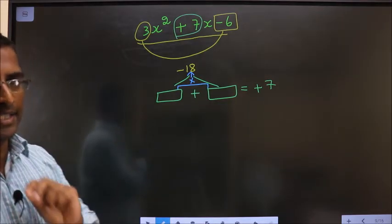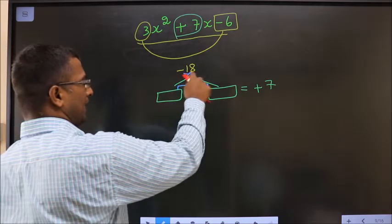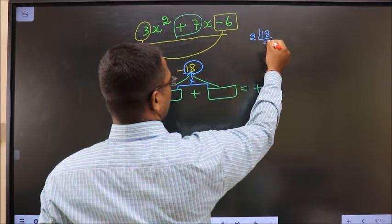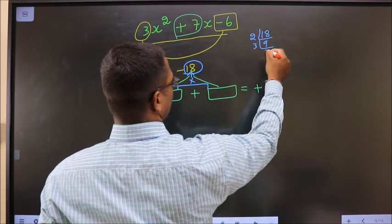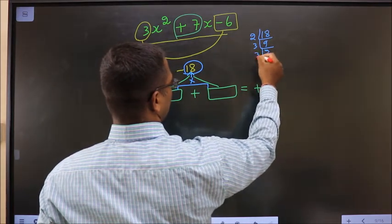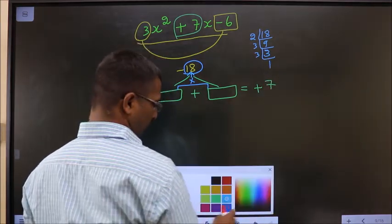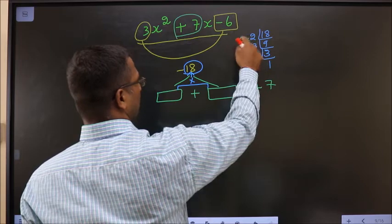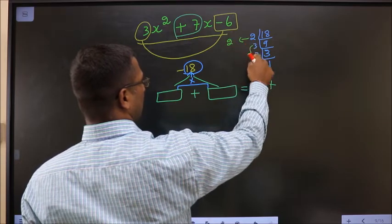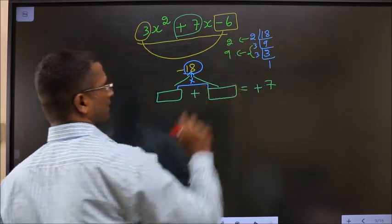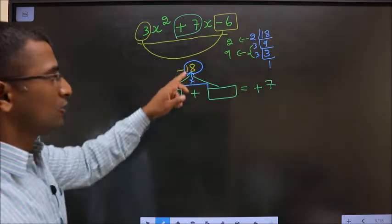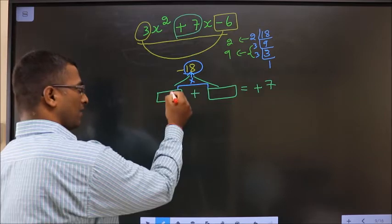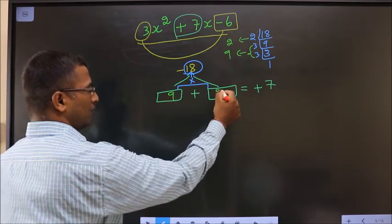By taking LCM of 18. So 18, 2, 9s, 3, 3s and 3, 1. So the 2 numbers will be, 1 number will be 2 and 3 into 3 will be 9. 9 into 2 is 18. 9 minus 2 is 7. So the 2 numbers are 9 and 2.